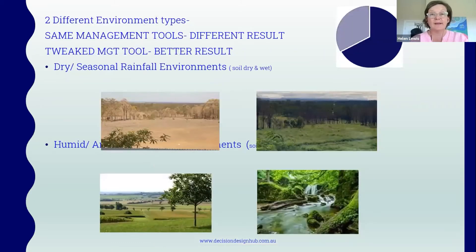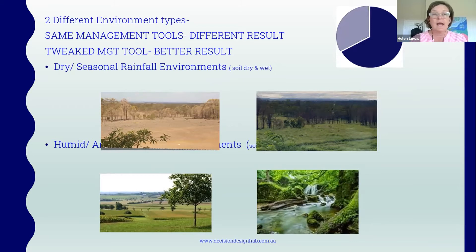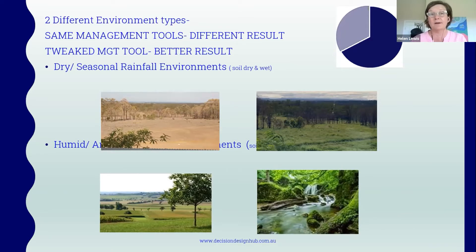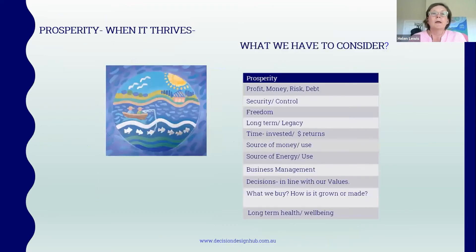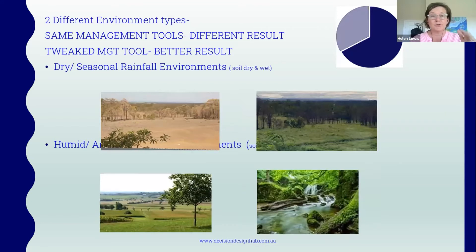There's another element that impacts how we look after those four functions: we have two different types of environments in the world. A brittle-tending environment has dry, seasonal rainfall and covers two-thirds of the world's surface. A humid environment is moist throughout the year and covers one-third of the earth's surface. If we apply the same management tools in the same way across both environments, we can get very different results. We have to tweak the management tool to ensure it's appropriately used in the right environment.